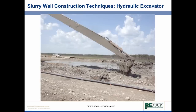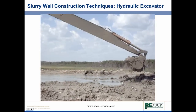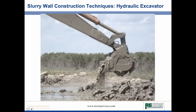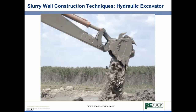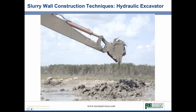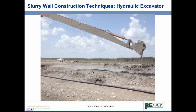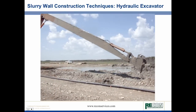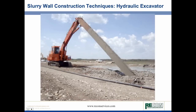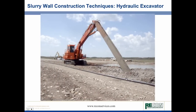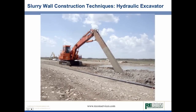The trench is supported with fluid — you can see the fluid coming out of the bucket. This fluid is a combination of bentonite and water, generally about 5% bentonite by weight. The slurry acts on the walls of the excavation, and the hydraulic head differential between the groundwater and the slurry level of the trench supports the wall as the hydraulic head differential presses against the filter cake.